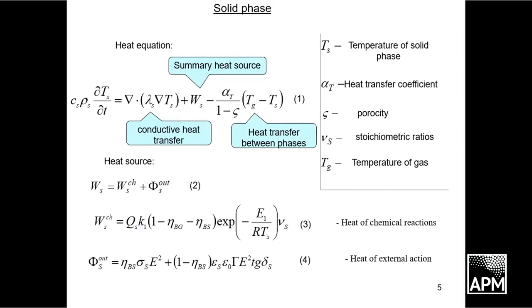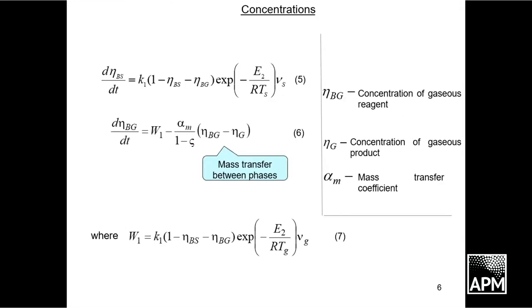We have a heat equation with conducted heat transfer and heat transfer between phases. We see heat sources. The first is heat of chemical reactions in the oil shale, and second is heat of external action by electrodes. The concentration of solid and gas products we describe with chemical kinetics equations.